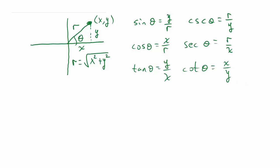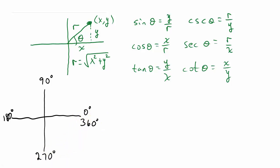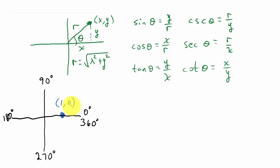So we want to find all the trig values of 0 and 360. Let's do 0 degrees. We know this is 0 degrees, 90 degrees, 180 degrees, 270, and then back to 360. So what we want to do is — here's 0 — we want to pick some point here, and we'll call this point (1, 0). Now you can call that point anything you want — you could call this point (5, 0) or (1/2, 0).